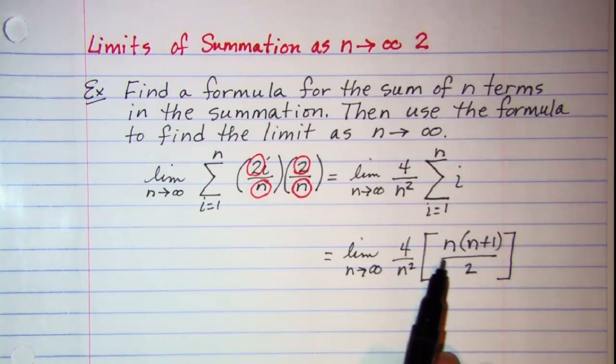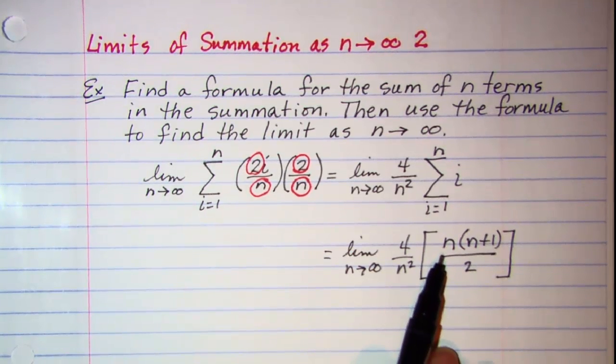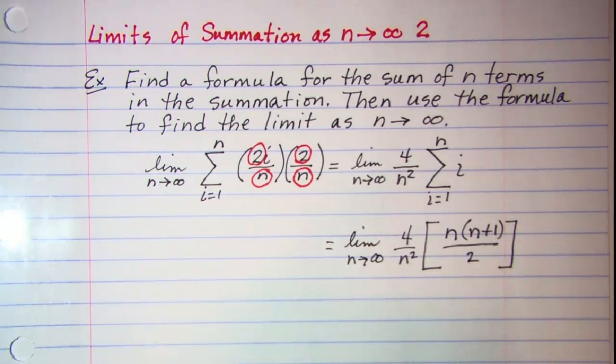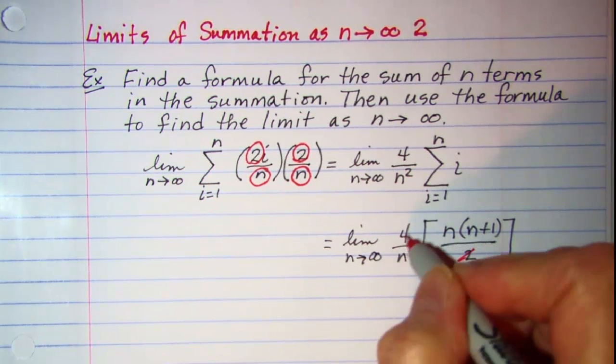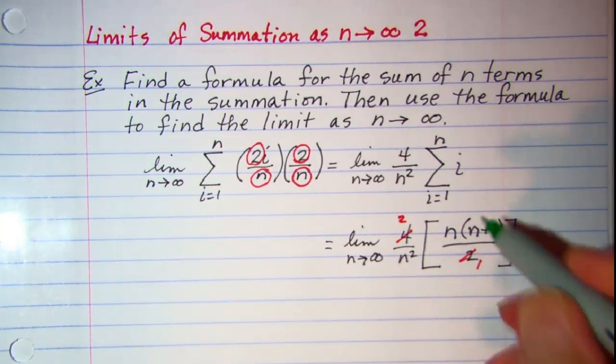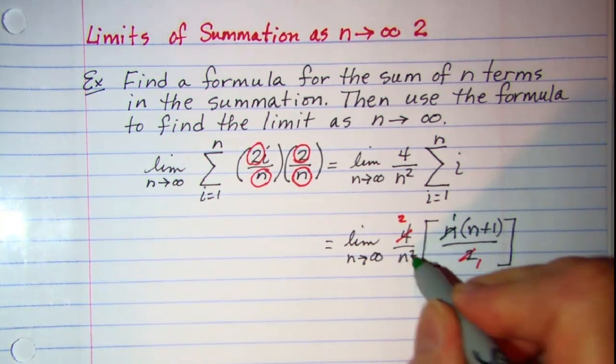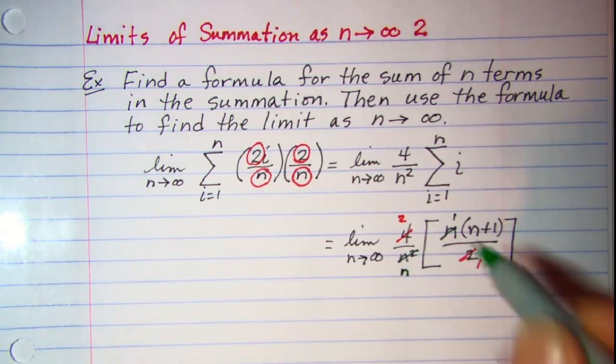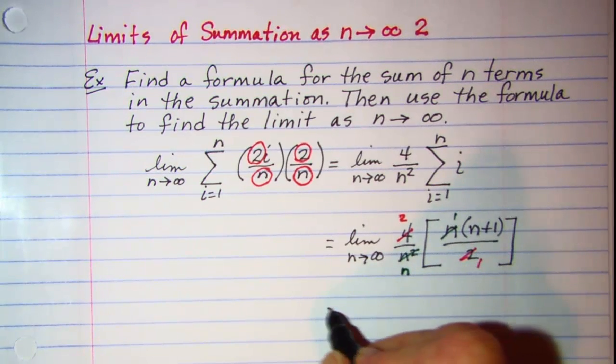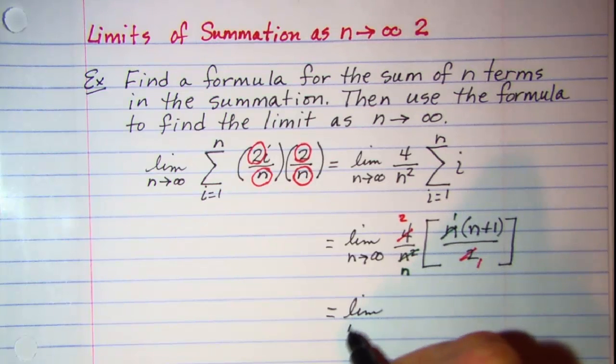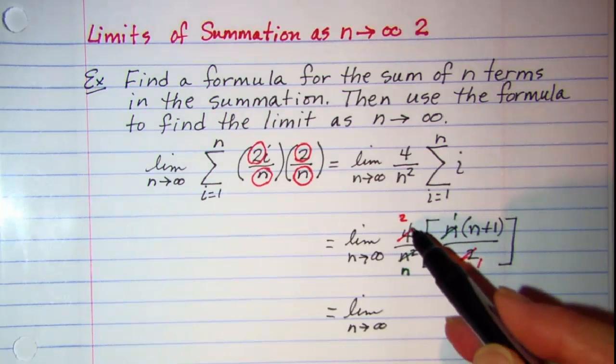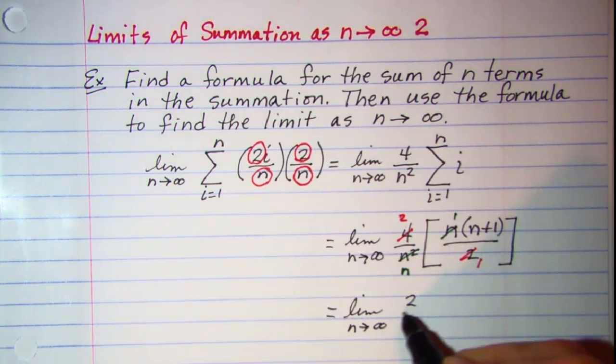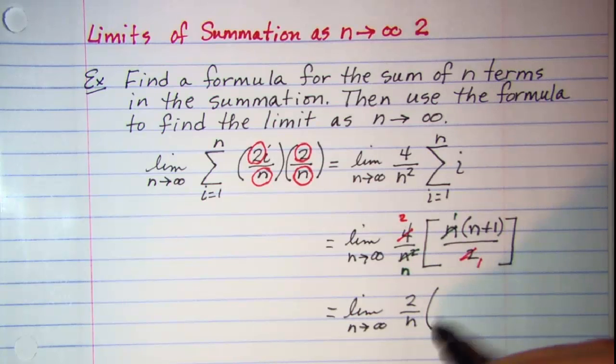Now I want to simplify this expression a little bit before I try to take the limit. I can cancel, and let me rewrite this. This is the limit as n approaches infinity and I have 2 over n multiplied by n plus 1.